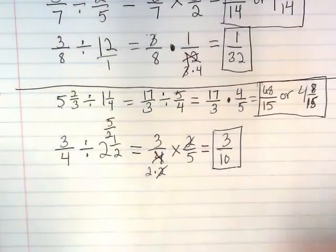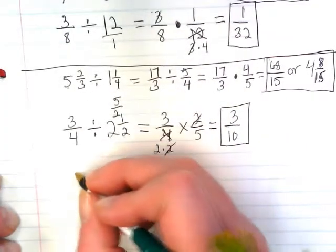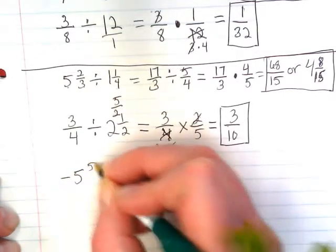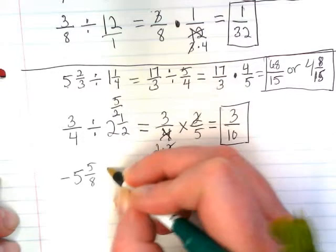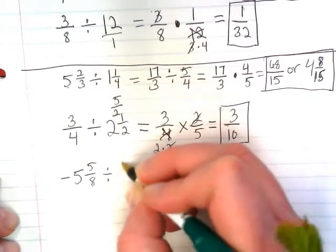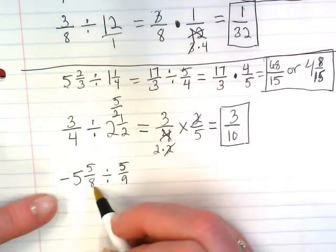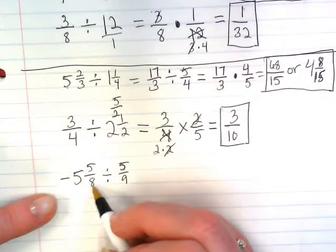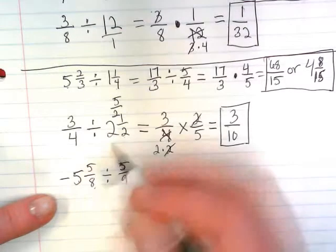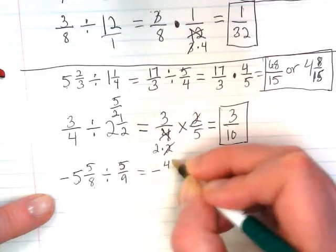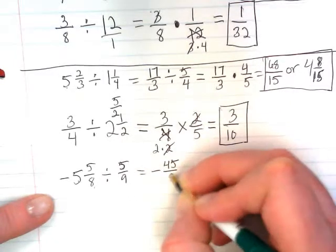Okay, you might encounter a negative in this today. Let's try negative 5 and 5 eighths divided by 5 ninths. We're going to convert this mixed number into an improper fraction. So 8 times 5 is 40, plus 5 is 45. So we end up with negative 45 over 8.